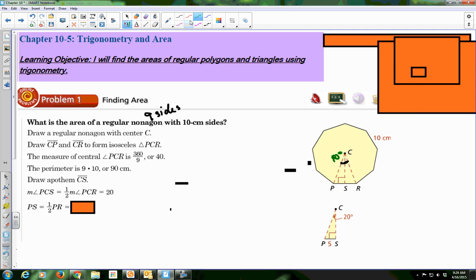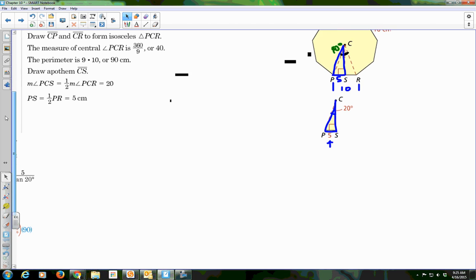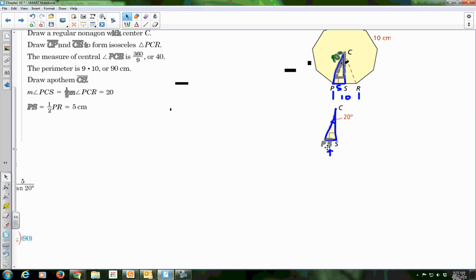So if you take this little triangle, triangle PCS, and you draw it out, he's going to have an angle of 20 right here, a side of 5 because the whole thing is 10, so half of it is 5. So that's where this 5 comes from.